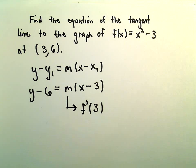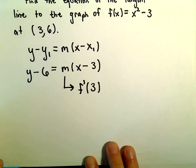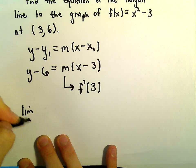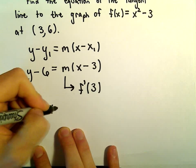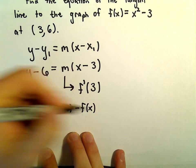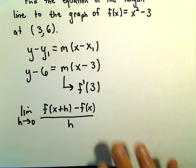So the kind of long part here is actually going to be computing the derivative. So let's do that. We've got the limit as h goes to 0, f of x plus h minus f of x all over h. We're just going to use our function here, x squared minus 3.